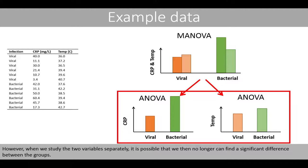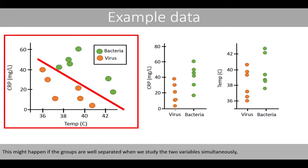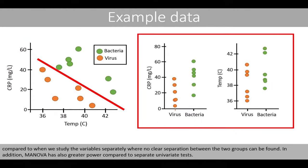However, when we study the two variables separately, it is possible that we no longer can find a significant difference between the groups. This might happen if the groups are well-separated when we study the two variables simultaneously, compared to when we study the variables separately, where no clear separation between the two groups can be found. In addition, MANOVA also has greater power compared to separate univariate tests.